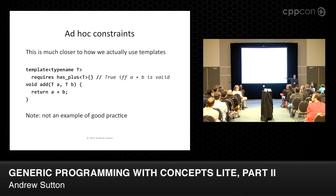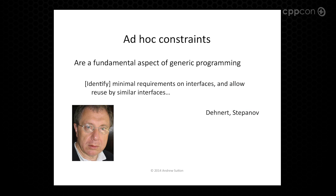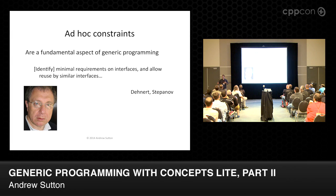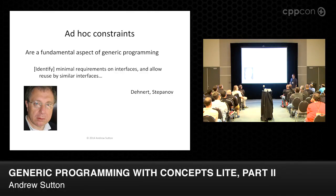There are a couple of reasons why this is not an example of good practice. It turns out that these ad hoc requirements end up being fundamental for what we generally perceive as generic programming for C++. The way generic programming is practiced today is built on this idea that you look at a generic algorithm and lift up all those individual type constraints and then express them as some cohesive abstraction.